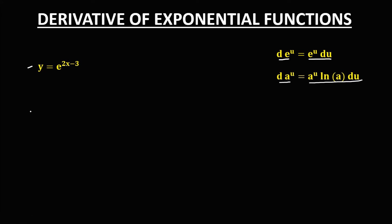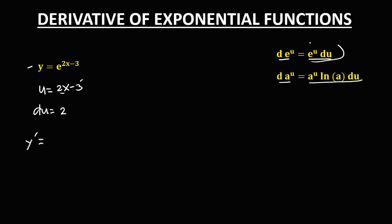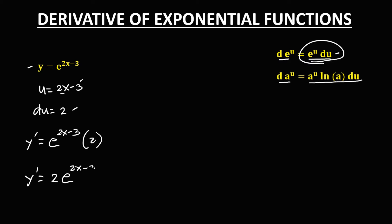So for this given, u is equal to 2x minus 3, and for the derivative of u: the derivative of 2x is 2, and the derivative of negative 3 is 0, so du is equal to 2. To find the derivative using this formula, that's e to the power u, so we have e to the power 2x minus 3 times the derivative of u, which is 2. Therefore, y prime is equal to 2 times e to the power 2x minus 3. So this is now the derivative.